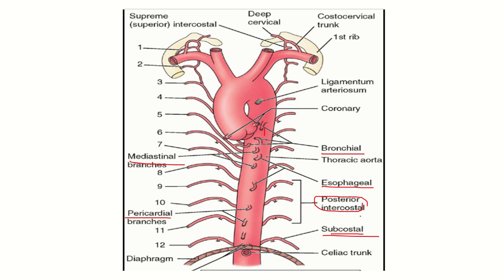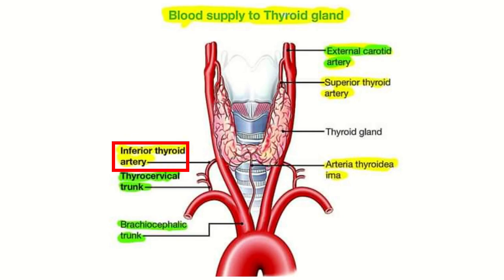Regarding the thyroid gland supply, the inferior thyroid artery supplies the inferior part of the thyroid gland. The inferior thyroid artery arises from the thyrocervical trunk, which itself arises from the subclavian artery. On the other hand, the superior thyroid artery arises from the external carotid artery.